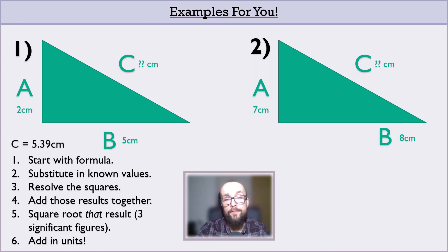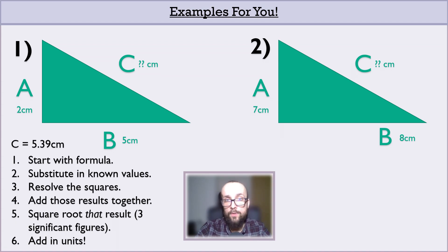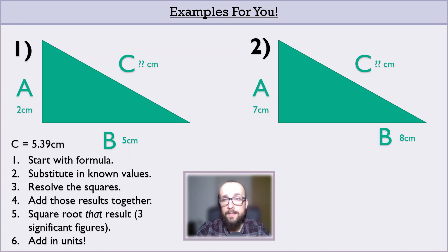If you got 5.39 centimetres for the first example, well done! The workings: A squared plus B squared equals C squared. Therefore, 2 squared plus 5 squared equals C squared. 2 squared is 4, and 5 squared is 25, so 4 plus 25 equals C squared — or 29 equals C squared. To get to C, find the square root of 29, which should be between 5 and 6 since 29 is between 25 and 36. The calculator tells us root 29 is 5.39 to three significant figures. So C equals 5.39 centimetres.